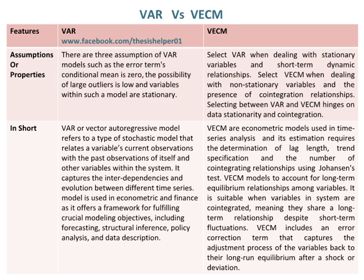Selecting between VAR and VECM hinges on data stationarity and co-integration. In short, VAR, or Vector Autoregressive model, refers to a type of stochastic model that relates a variable's current observations with the past observations of itself and other variables within the system. It captures the interdependencies and evolution between different time series. The model is used in econometrics and finance as it offers a framework for forecasting, structural inference, policy analysis, and data description.